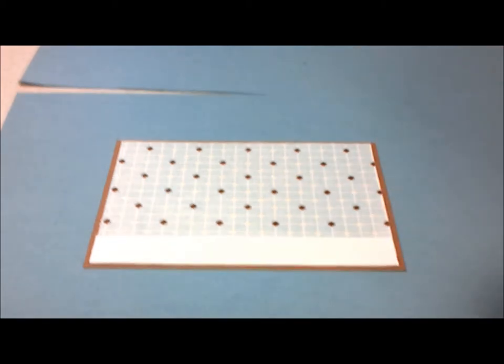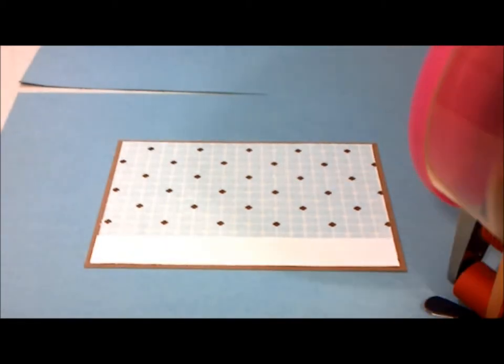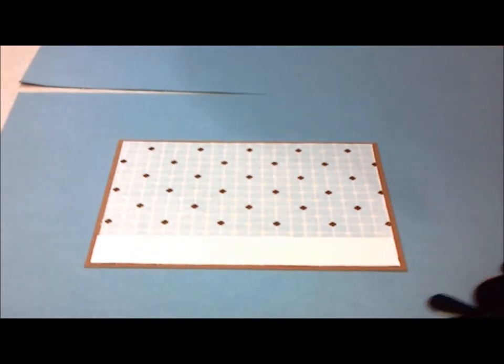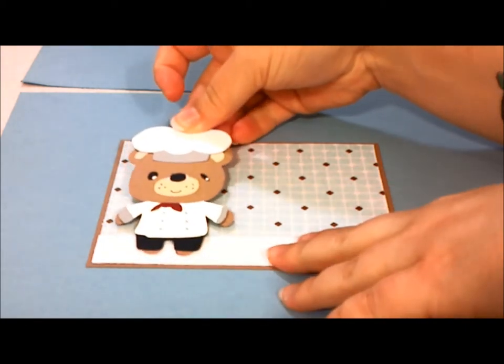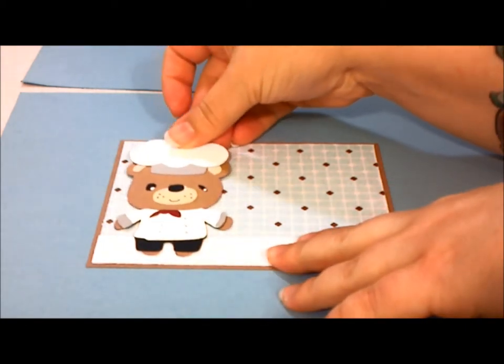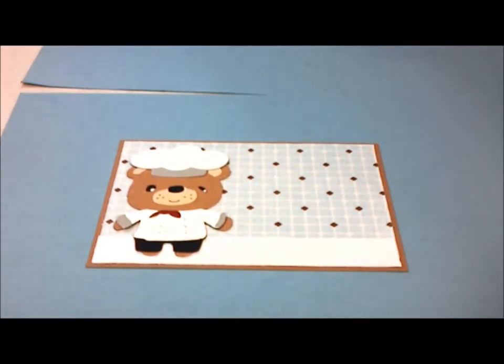And then we're going to glue our cute little bear down. There we go. Sometimes it takes a little bit to get this new glue started on this gun. Here's our little bear.